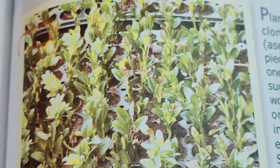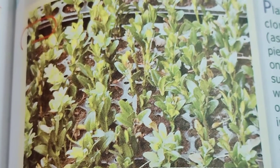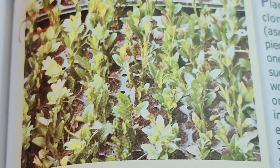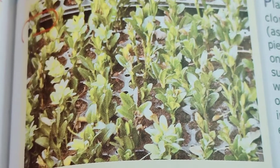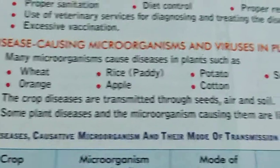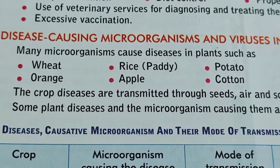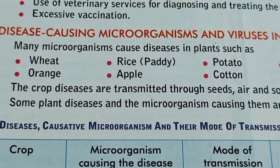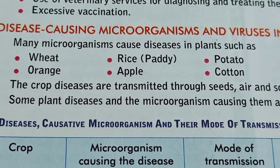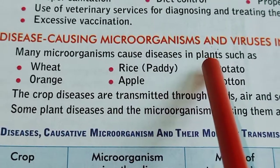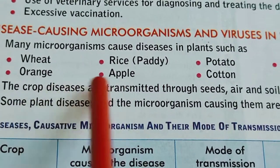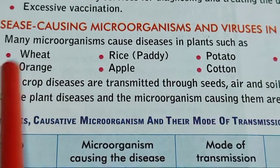Good morning, class 8 students. Welcome to our next topic in the chapter microorganisms. Our next topic is plant diseases and their pathogens. Like animals, plants also get infected by different microorganisms in the field. Many microorganisms cause diseases, mostly affecting cereal plants and fruit-bearing plants.